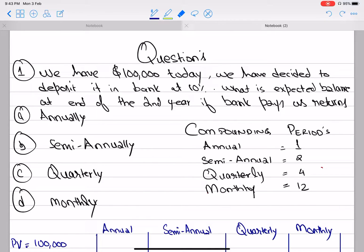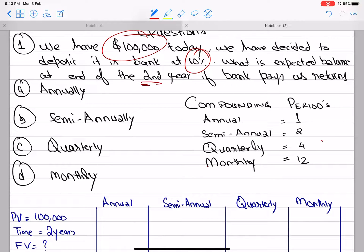Okay, I have a question. I have $100,000 that I'm going to invest in my bank, and the bank has offered me a 10% return. What I want to find out is how much balance I will have in the second year if the bank offers me a return annually, semi-annually, quarterly, or monthly.